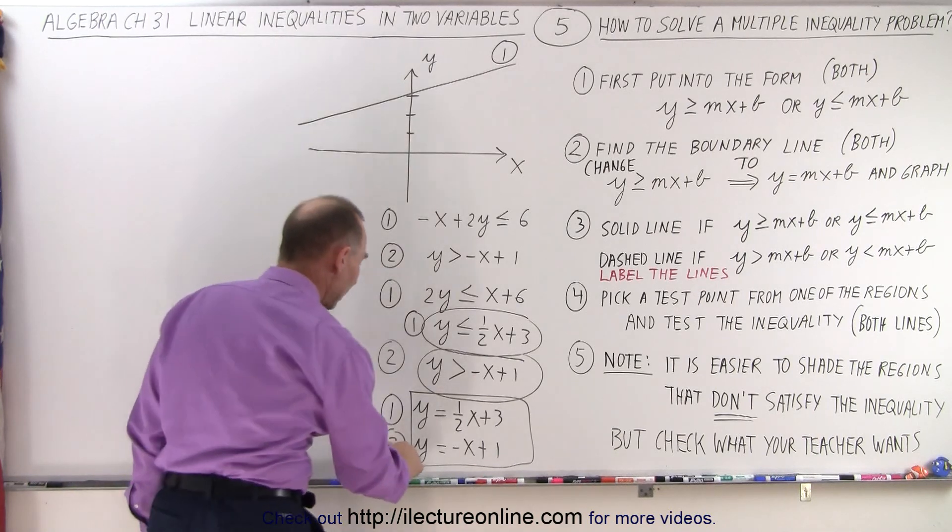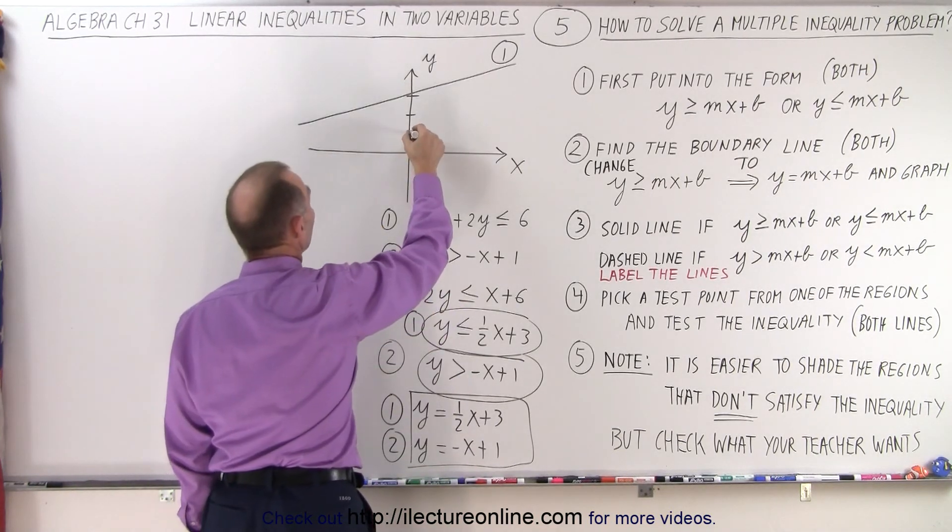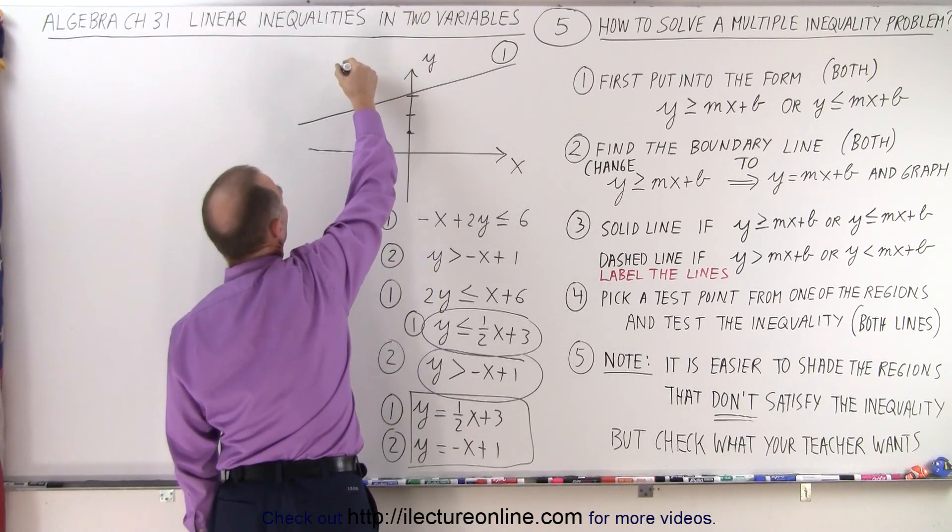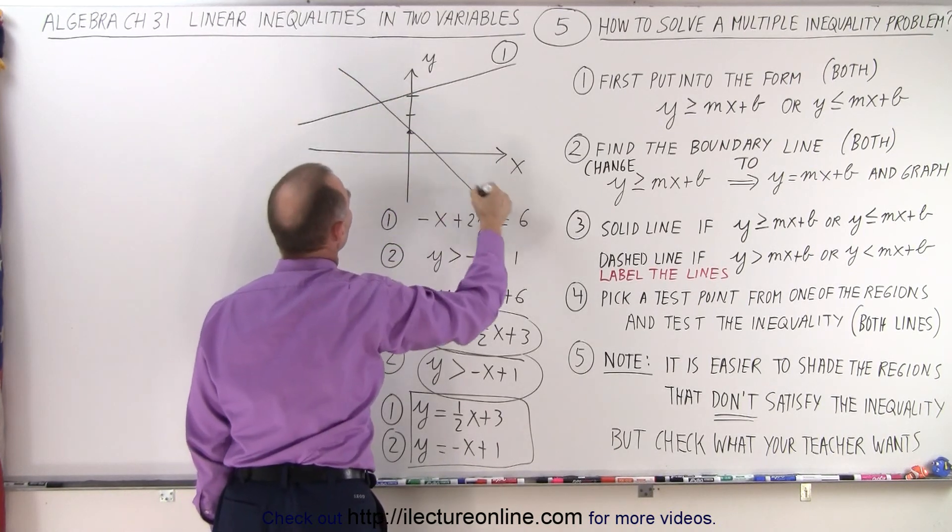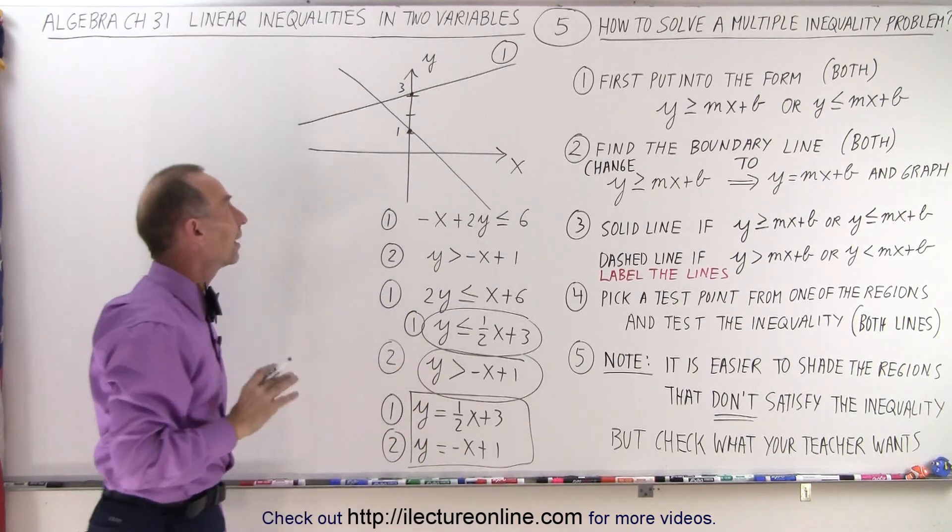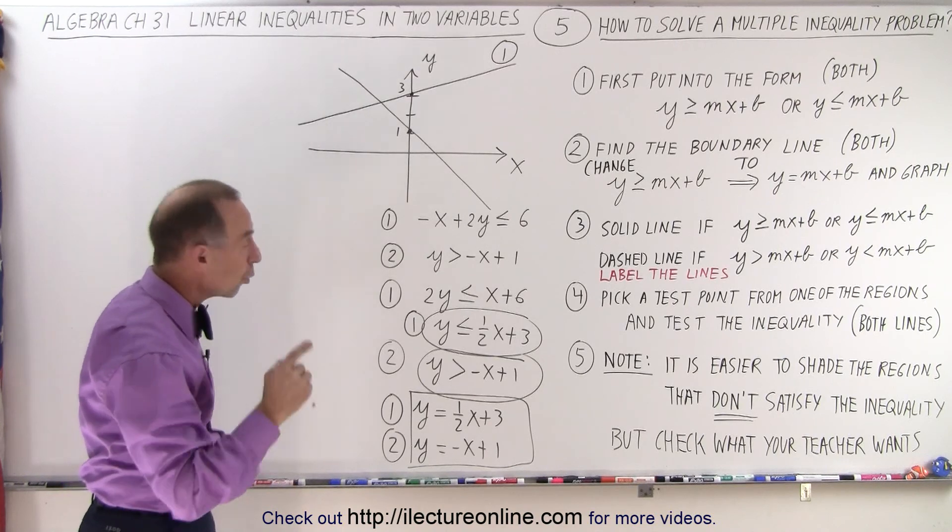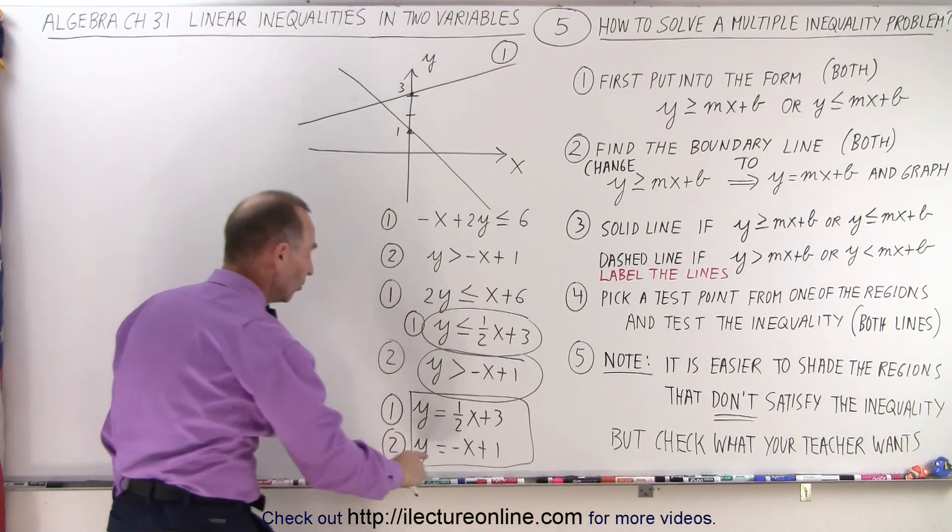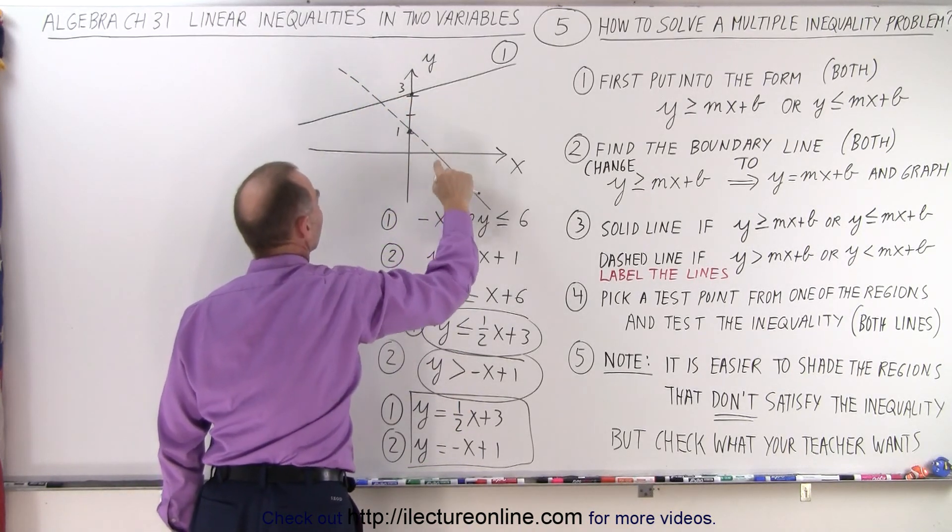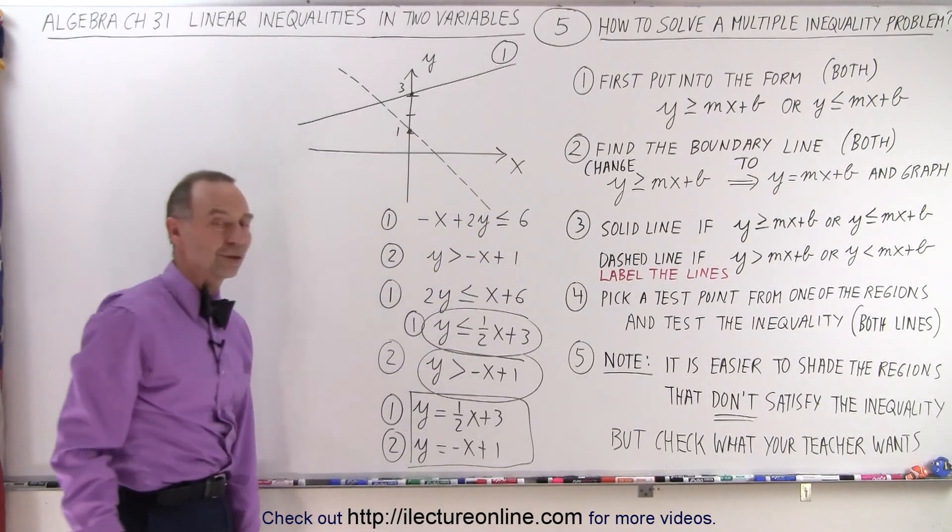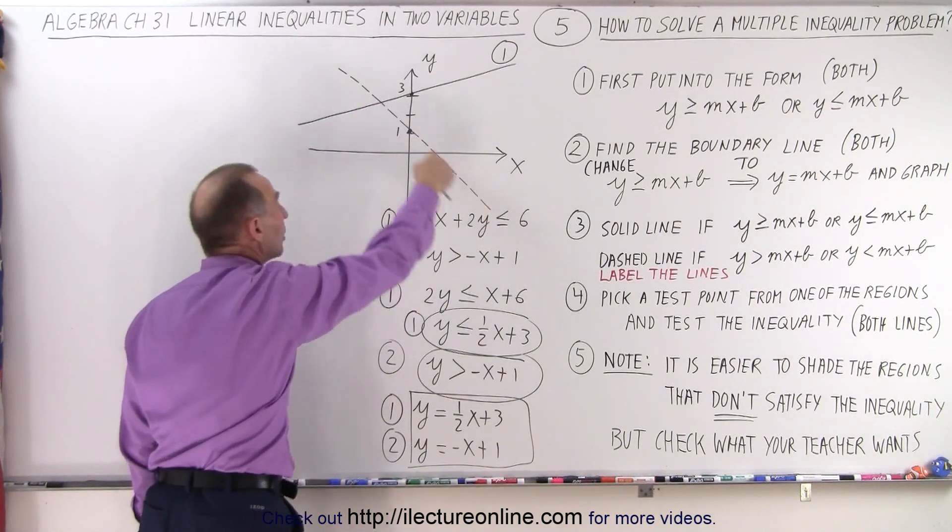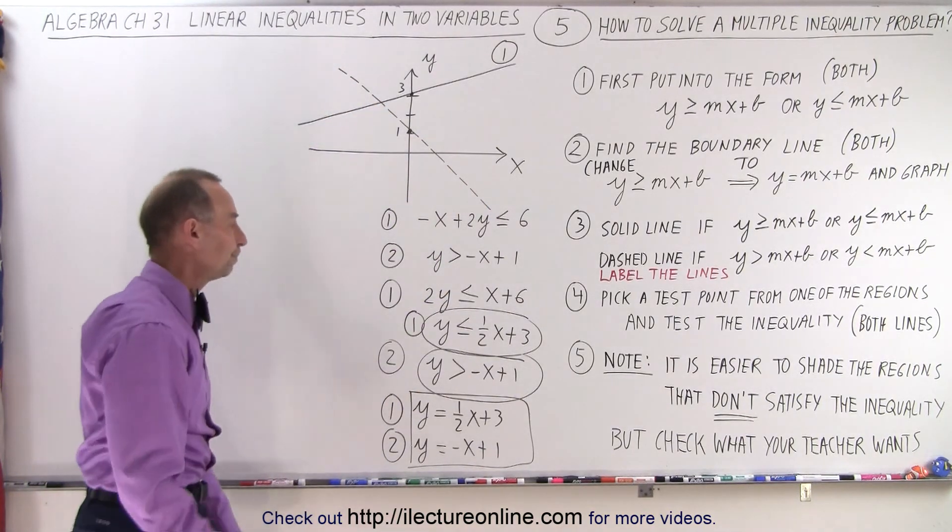Next, y equals minus x plus 1. So plus 1 is the y-intercept, and then the slope is minus 1. Now you can see that with the two boundary lines, oh, and by the way, I missed something. Since we don't have an equal symbol there, we need to draw a broken dashed line. So I just turned it into a dashed line rather than a solid line, because that means the points on this line are not part of the solution.